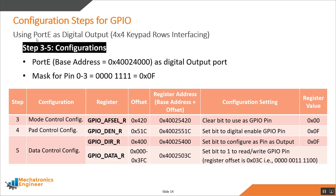Port E is configured as digital output for the keypad rows, using pins 0–3 (mask: 0x0F). The alternate function select register is cleared to zero. The digital enable register enables pins 0–3, and the direction control register sets these 4 bits to configure them as output pins. The 12-bit GPIO data register offset for pins 0–3 is 0x03C.